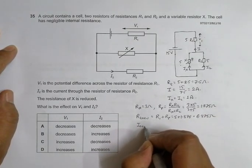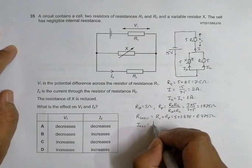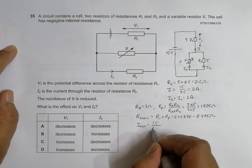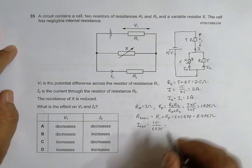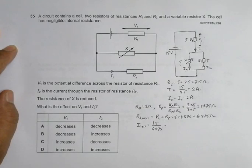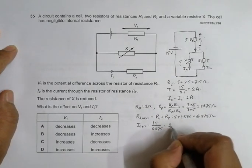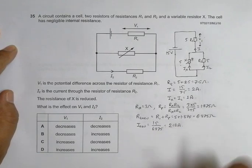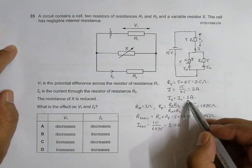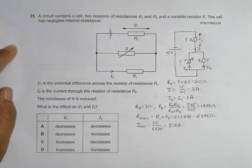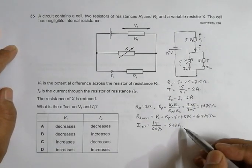So this gives us the new current is equal to I new is equal to 15 by 6.875 equal to 2.18 ampere. So the overall current has increased.